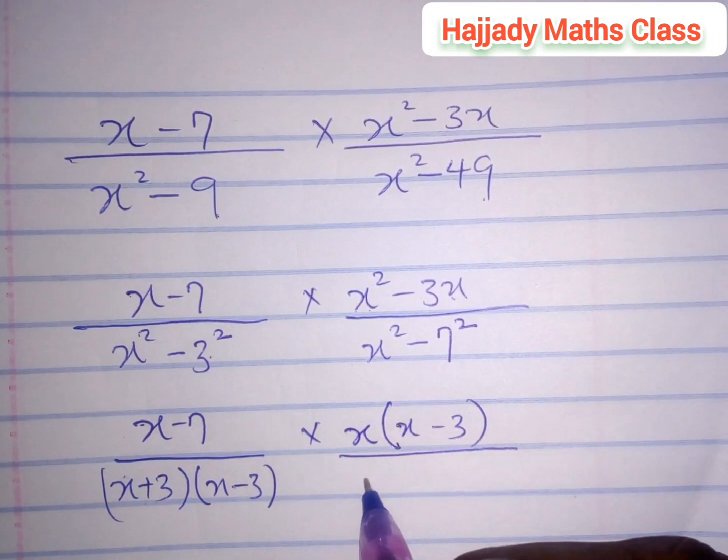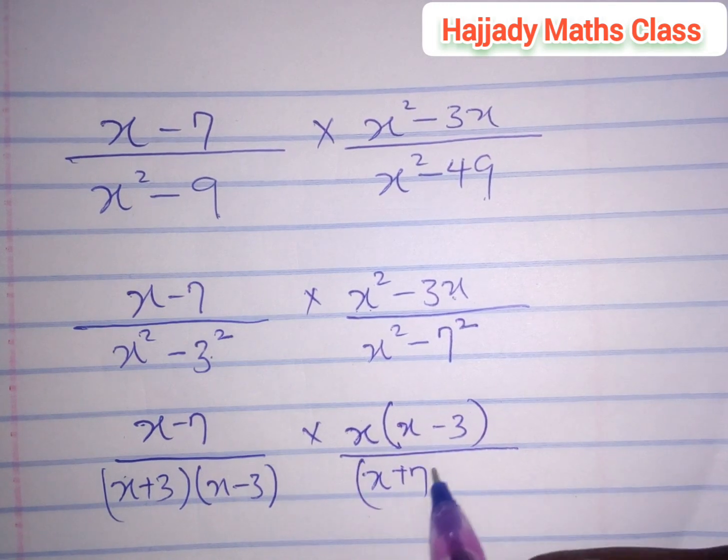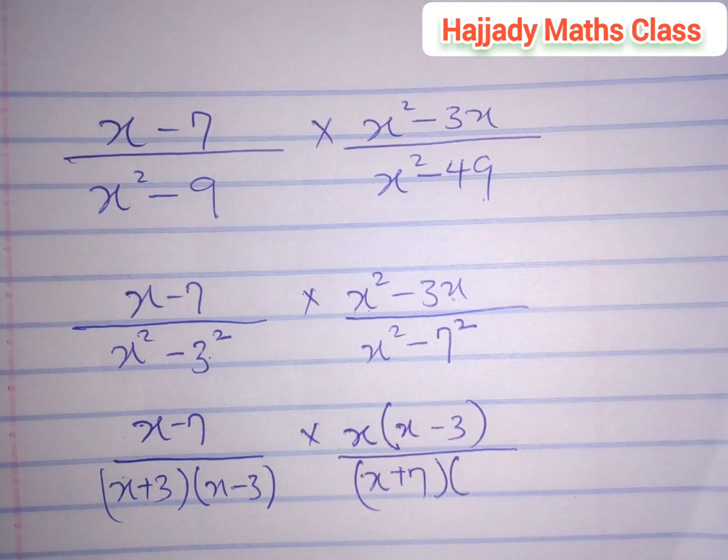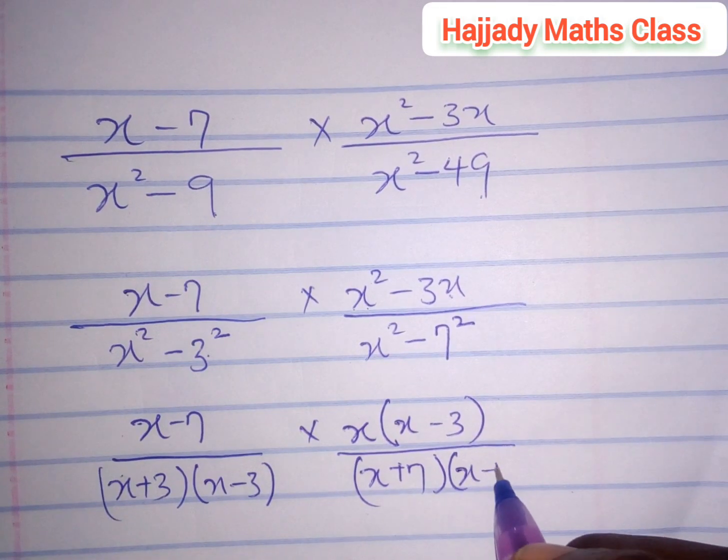Divided by (x + 7)(x - 7), using the knowledge of difference of two squares.